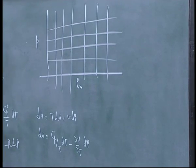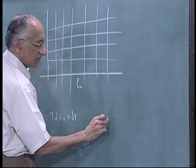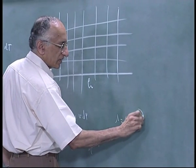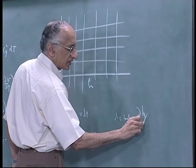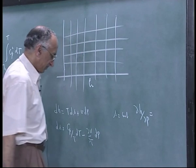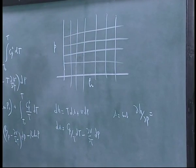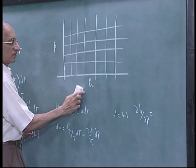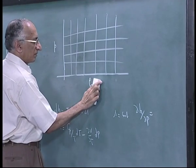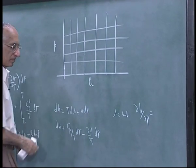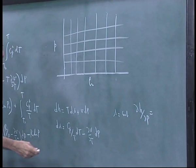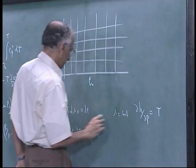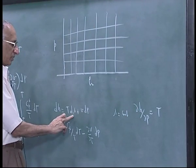If you look at isentropic lines for S equal to constant, you get the partial of H with respect to P. Remember, the partial of H with respect to P is the inverse of the slope on this diagram. And this is clearly equal to T.